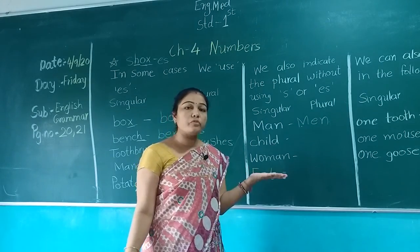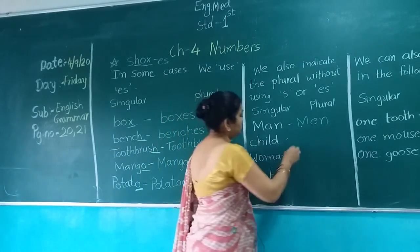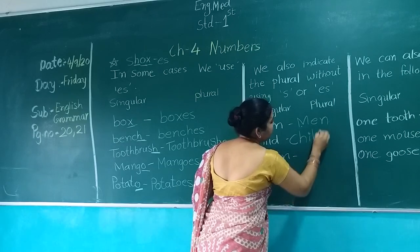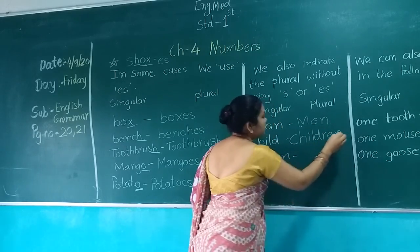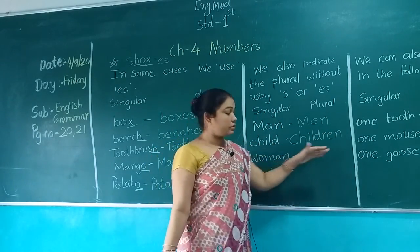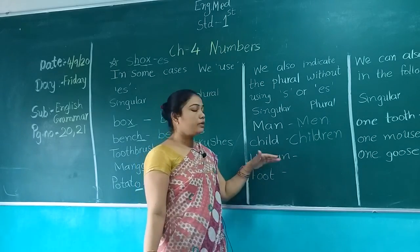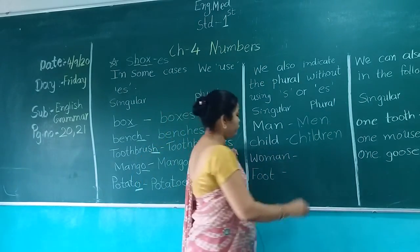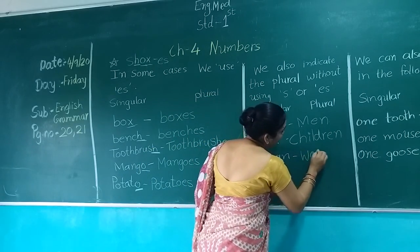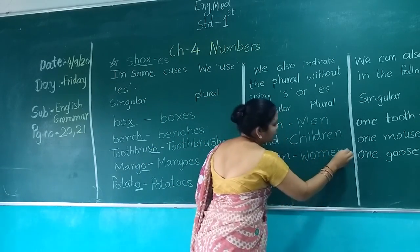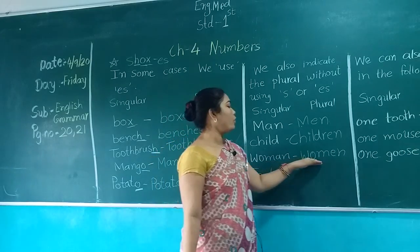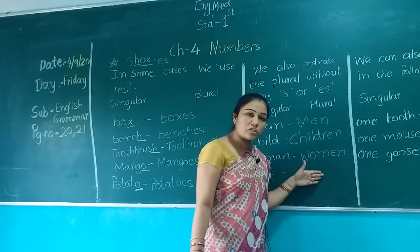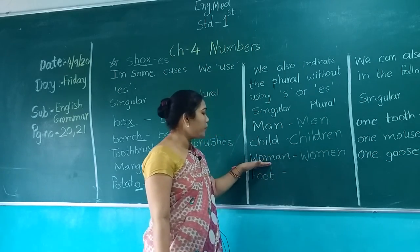Child. What is the plural form of child? Children. C-H-I-L-D-R-E-N. Woman. What is the plural form of woman? Women. W-O-M-E-N. Spelling also different and pronunciation also different. Woman — Women.